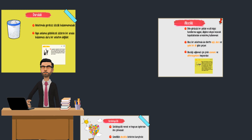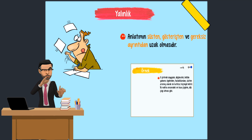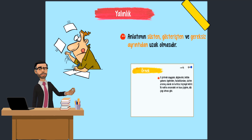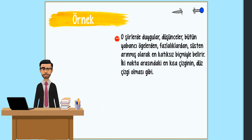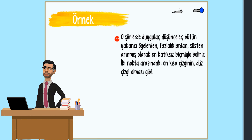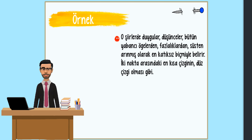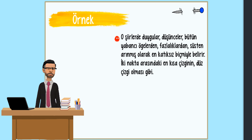Şimdi ise yalınlık neymiş ona bakıyoruz. Anlatımın süsten, gösterişten ve gereksiz ayrıntıdan uzak olmasıdır. O şiirde duygular, düşünceler, bütün yabancı ögelerden, fazlalıklardan, süsten arınmış olarak en katıksız biçimiyle belirir. İki nokta arasındaki en kısa çizginin düz çizgi olması gibi.